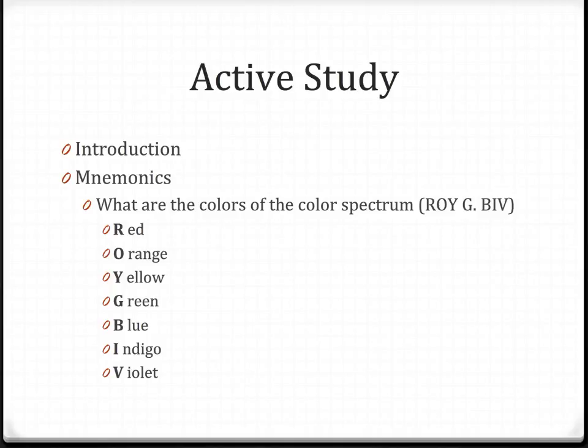noting the first letter and arranging the letters into a sense or nonsense word — the sillier, the better. These are called mnemonics. For example, what are the colors of the color spectrum? You could remember the name Roy G. Biv, where the letters of the colors correspond to that name.